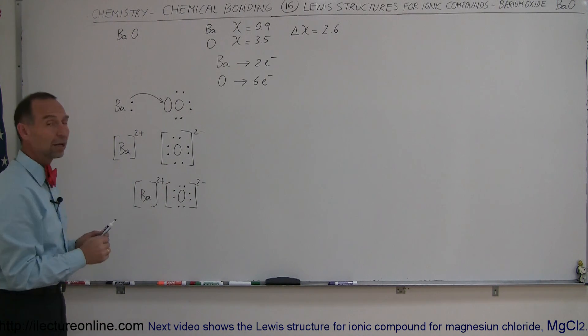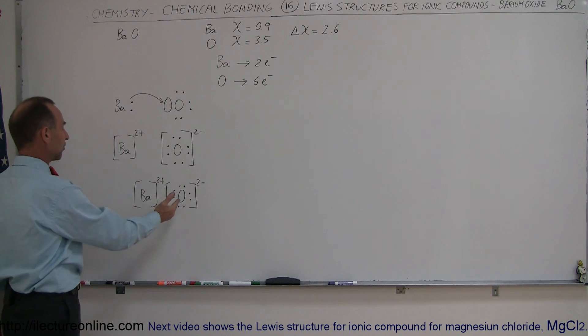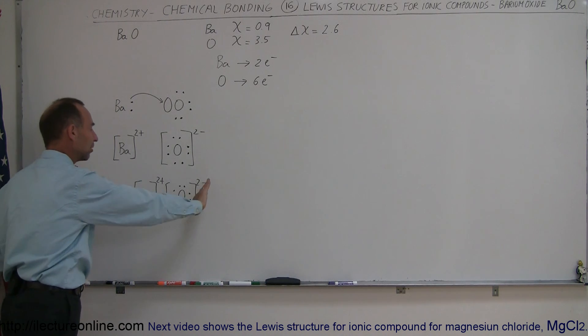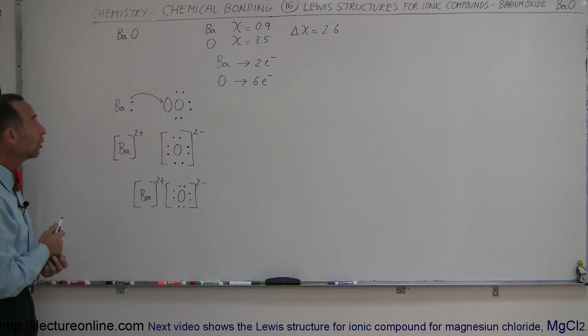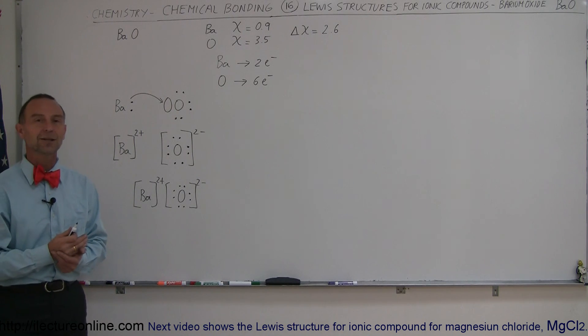They're separated by an ionic charge, so you can see there's more positive charge on the left side and more negative charge on the right side of that molecule. That's how you draw the Lewis structure for that ionic compound.